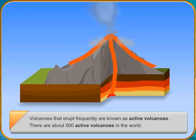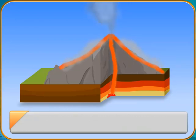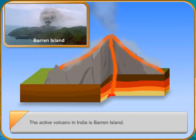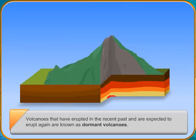Volcanoes that erupted in the recent past and are expected to erupt again are known as dormant volcanoes. They show no signs of activity for several years and then erupt suddenly. Dormant volcanoes are also known as sleeping volcanoes.